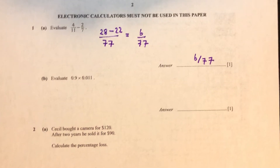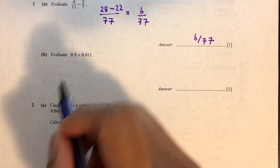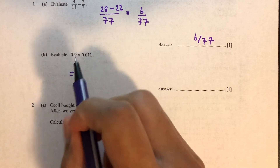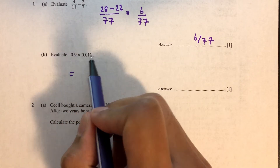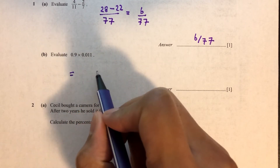Moving on to part B. We have 0.9 multiplied by 0.011. The trick is to multiply those two numbers first. So 9 times 11 is 99.